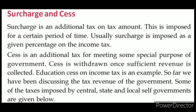Surcharge and cess are two other sources of government income related to tax. A surcharge is an additional tax on the tax amount, imposed for a certain period of time — usually as a given percentage on income tax, meaning persons with higher income pay more surcharge. A cess is an additional tax for meeting some special purpose of the government, and it is withdrawn once sufficient revenue is collected. Education cess on income tax is an example.